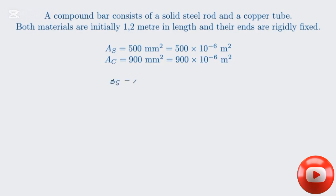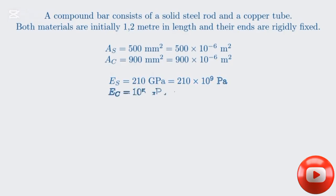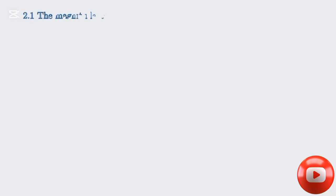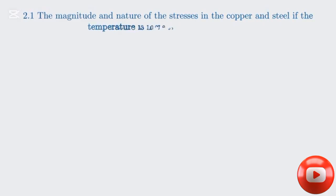The material properties are also provided. The modulus of elasticity for steel, E_S, is 210 gigapascals, and for copper, E_C is 105 gigapascals. The coefficient of thermal expansion for steel, alpha_S, is 12 times 10 to the minus 6 per degree Celsius, and for copper, alpha_C is 18 times 10 to the minus 6 per degree Celsius. Notice that copper expands more than steel for the same temperature change. We have two main questions to answer.